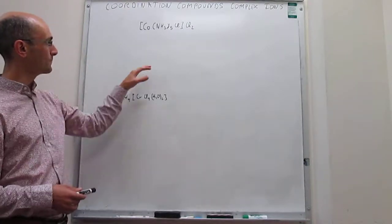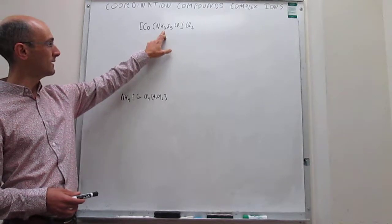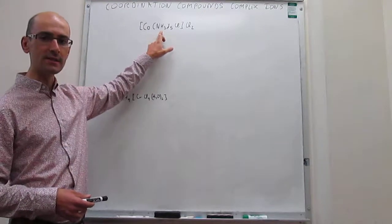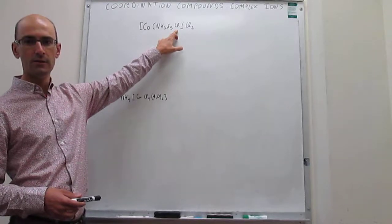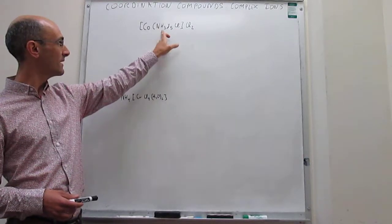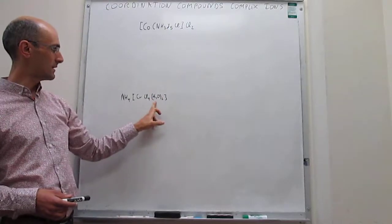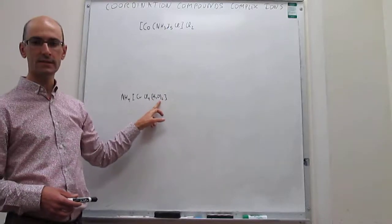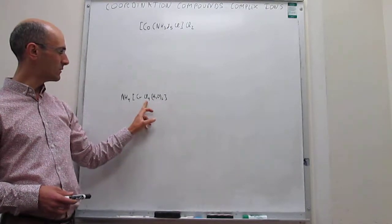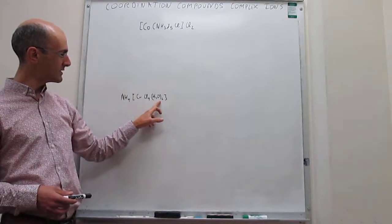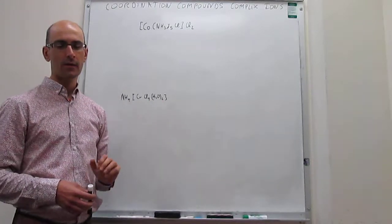So in this case, this will be the ligand amine, which starts with the letter A, and that is chloro. You will first name the amine, and then the chloro. In the other case, this ligand is going to be called aqua, and this is going to be chloro, so you will first name aqua, and then chloro.